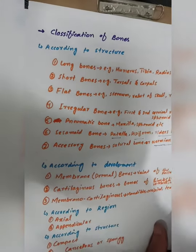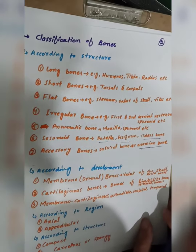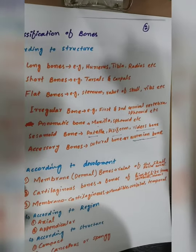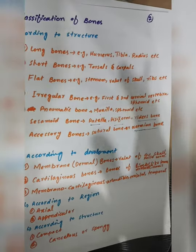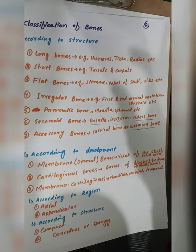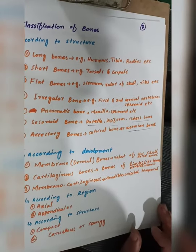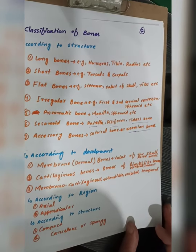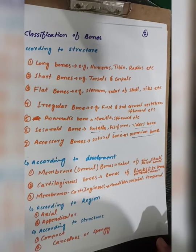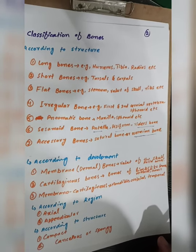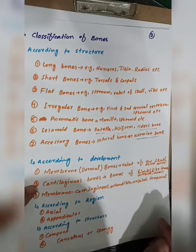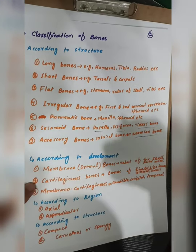According to development, there are three types of bones. The first is membrane or dermal bones. Bone development can occur in a membrane or a cartilage. Membrane bones develop directly within a membrane. The facial bones are examples of membrane bones. The other type is cartilage bone, which is formed by replacement of cartilage.